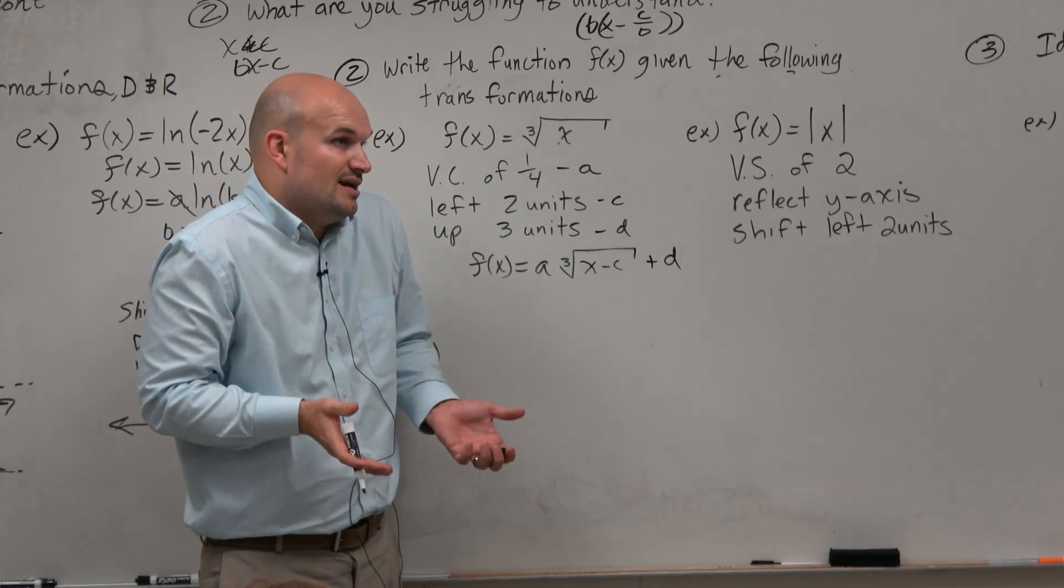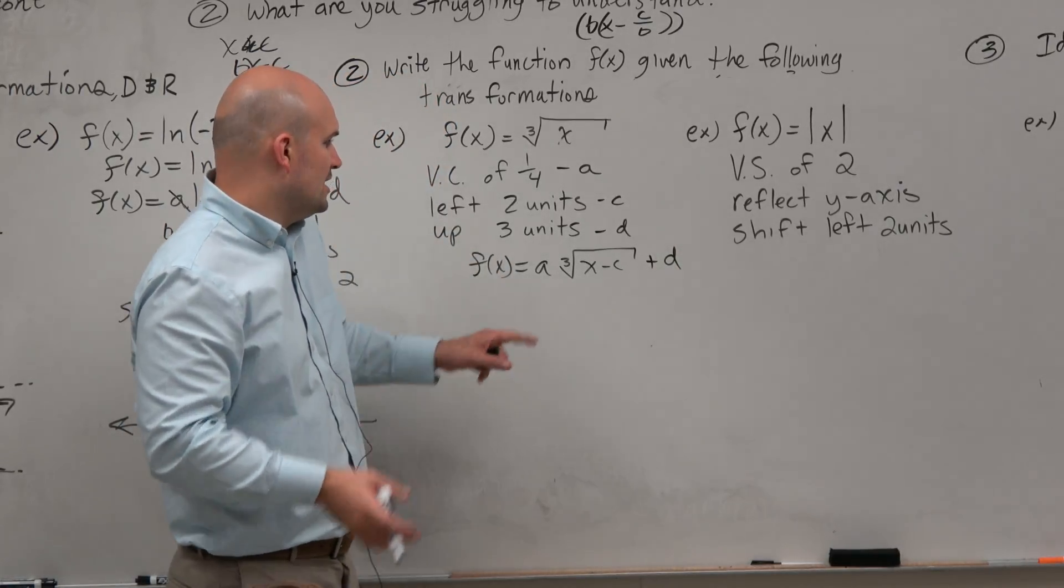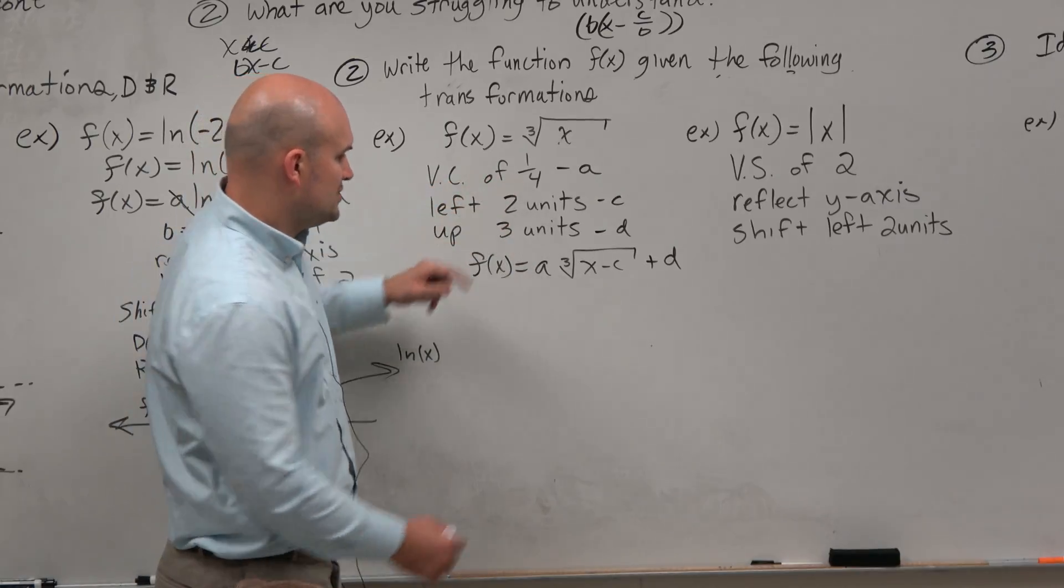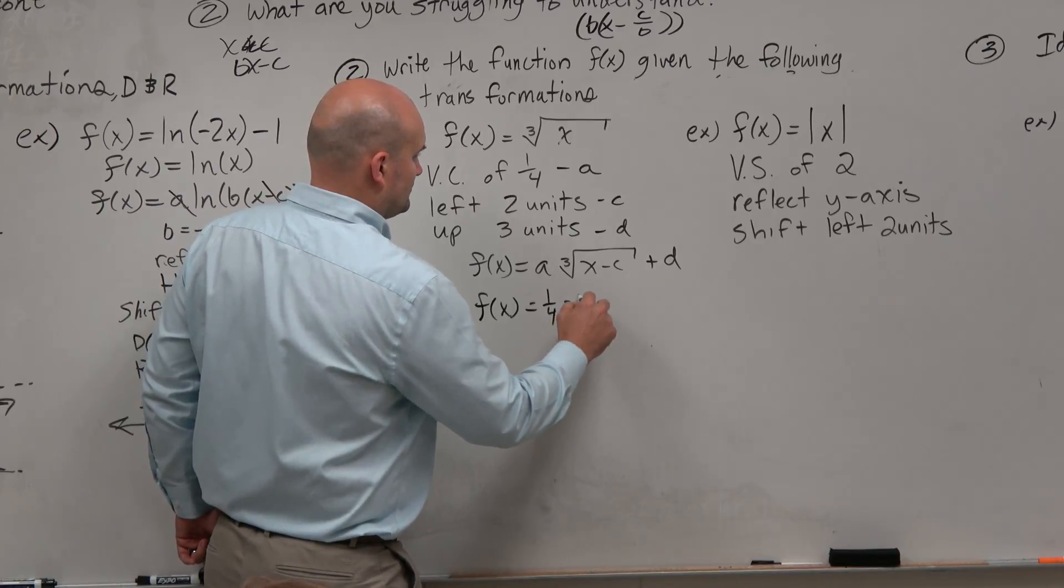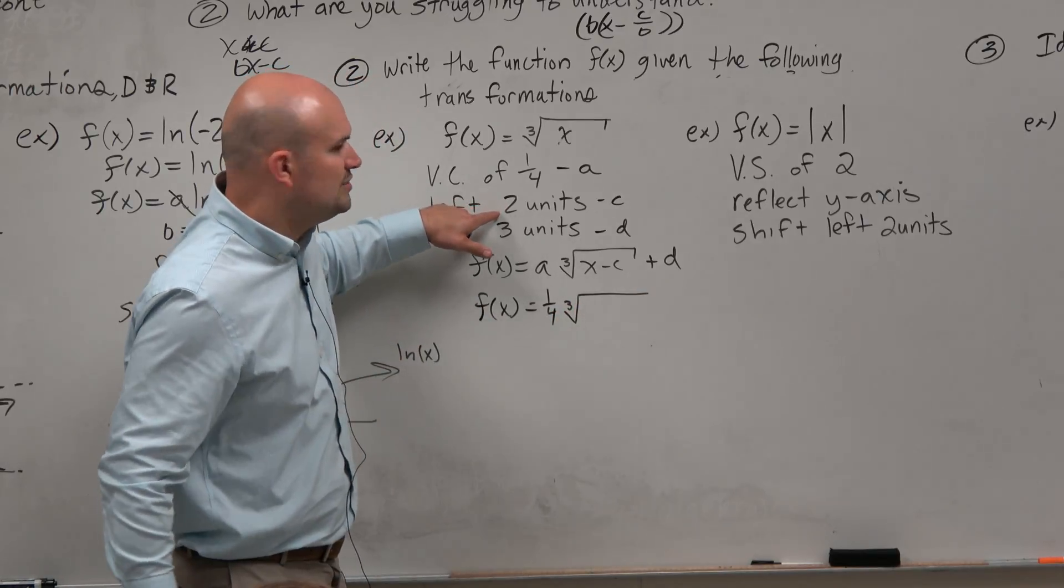And now, guys, you're really just kind of understanding where does everything go. A is a vertical compression of 1/4. OK, well, I can represent that. How would I write two units to the left? Should that be x plus 2 or x minus 2?